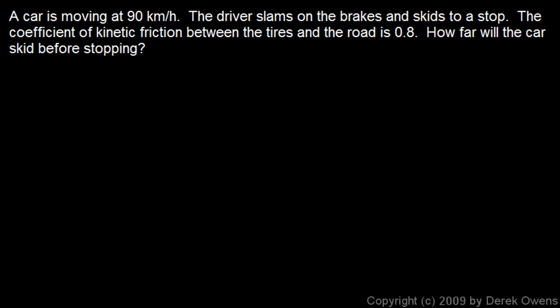Alright, I like to do things in metric units, so I'm going to take this initial velocity, 90 kilometers per hour, and I'm going to multiply that in order to convert it to meters per second. So I multiply by 1,000 meters per kilometer, and the kilometers cancel out.